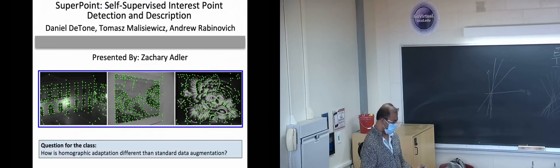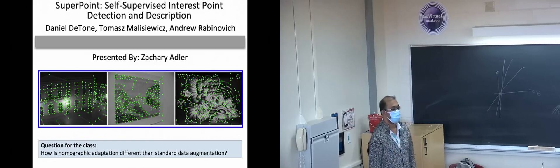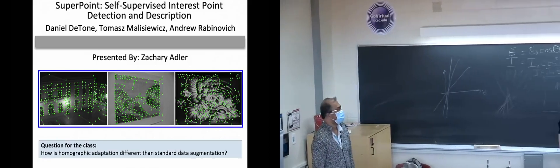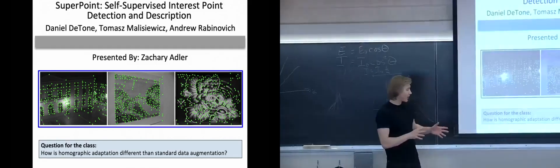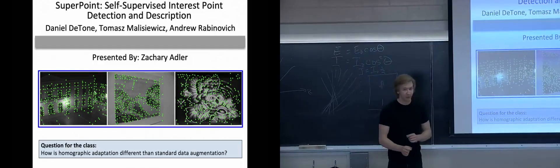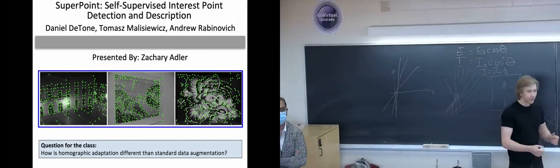Hello everyone, my name is Zachary Adler and I'll be presenting SuperPoint: self-supervised interest point detection and description by Detone et al. So a question for the class to start out with is how is homographic adaptation different than standard data augmentation? This is just something to think about as we go through the presentation.